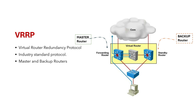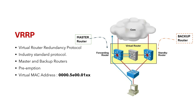Another important difference is that VRRP enables preemption by default. You don't need to configure it, which means if a higher priority router becomes available it automatically takes over the role of the master. Whereas HSRP requires manual configuration to enable preemption. VRRP uses a MAC address format of 0000.5E00.01XX, where XX is the VRRP group ID, which is a similar format to HSRP but different.